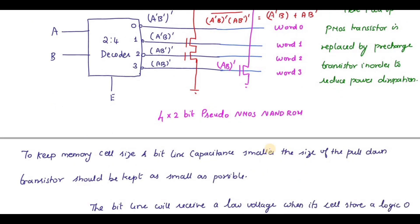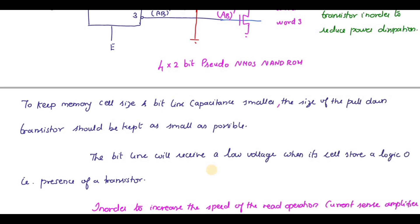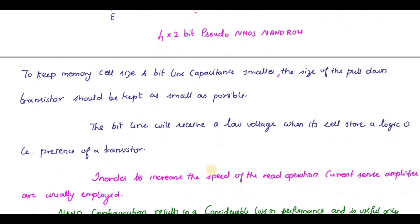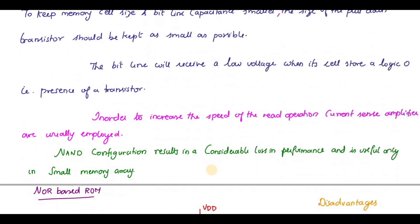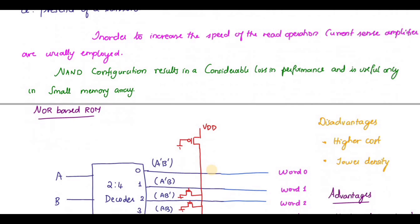To keep the memory cell size and bit line capacitance smaller, the pull-down transistor size should be kept as small as possible. The bitline receives a low voltage when its cell stores logic zero. To increase speed, transistor currents in sense amplifiers are employed. Compared to NOR, NAND configuration results in considerable losses in performance and is useful only in smaller memory arrays.